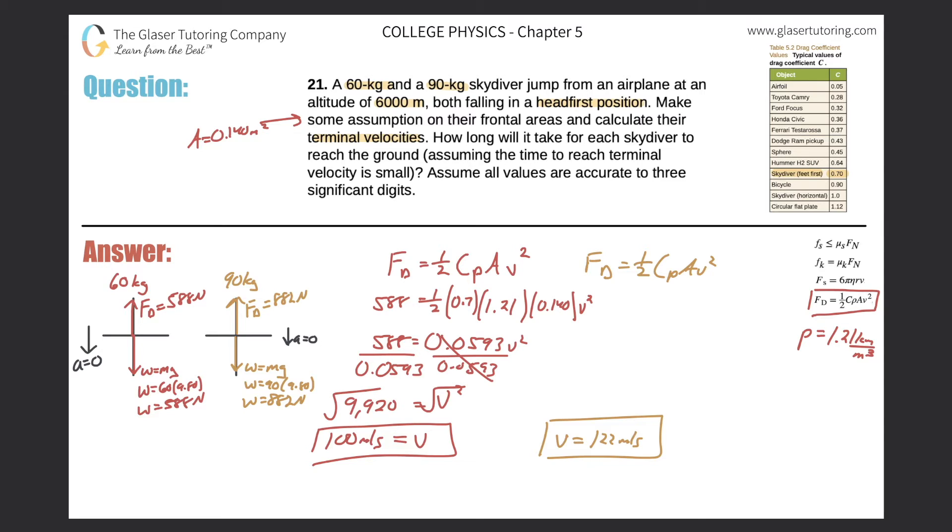And the second part was, it says now, if we continue reading, how long does it take? So in terms of time, how long does it take for each skydiver to reach the ground, assuming the time to reach terminal velocity is small? Now, in order to really do this, we'd have to figure out formulas that basically deal with reaching terminal velocity as a function of time. And we'd have to do some upper level math. But what they're telling us is to assume that the time to get to terminal velocity is small. And what that means is that I'm going to assume that we get right to terminal velocity.